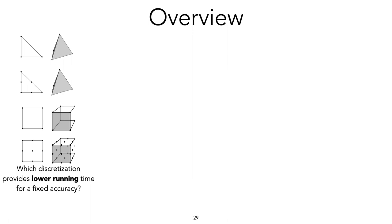The first question is which discretization to use. Since all different finite element methods should produce the same result under refinement, the right question to ask is: which discretization gives the lowest running time for a fixed accuracy? We want a result of a given accuracy — depending on the application — spending as little time as possible, including meshing time, basis construction time, and solve time.